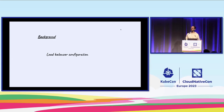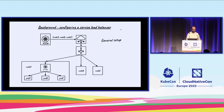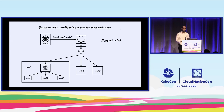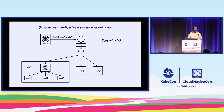So how do v1 Service load balancers work today? The first part I'm going to present is the general load balancer configuration and what happens when you create a Service of type LoadBalancer on a Kubernetes cluster. On the control plane, in the API server, there's a controller called the Kubernetes Cloud Controller Manager — abbreviated KCCM — that has a service controller which watches services and nodes.